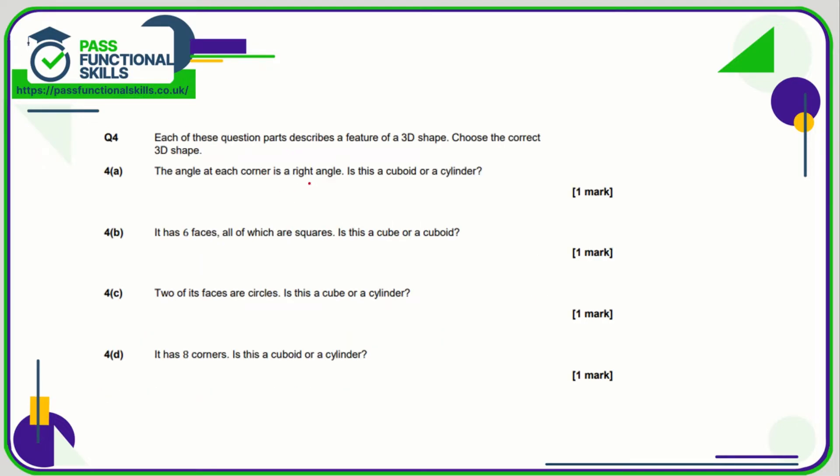The angle at each corner is a right angle - is it a cuboid or a cylinder? Well, a cylinder doesn't have any right angles, so it's a cuboid. Six faces, all of which are squares - cube or cuboid? It's a cube because a cuboid would have some rectangular faces. Two of the faces are circles.